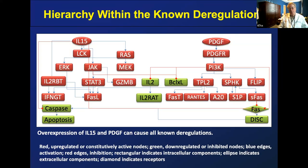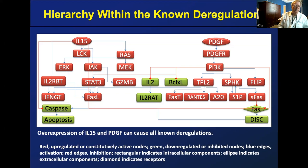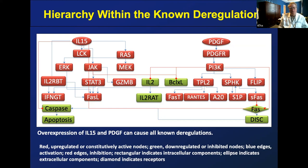Survival signals in LGL leukemia were identified in a paper published more than 15 years ago — one of the first papers applying network theory to human disease. In red are the nodes turned on abnormally, and in green are those turned off. Apoptosis is turned off, which is the core problem: there's profound dysregulation of apoptosis, and these cells are surviving a long time. The two major nodes turned on are IL-15 and PDGF. IL-15 is expected as a chronic growth factor for activated T cells, and there's also involvement of sphingolipid metabolism nodes.